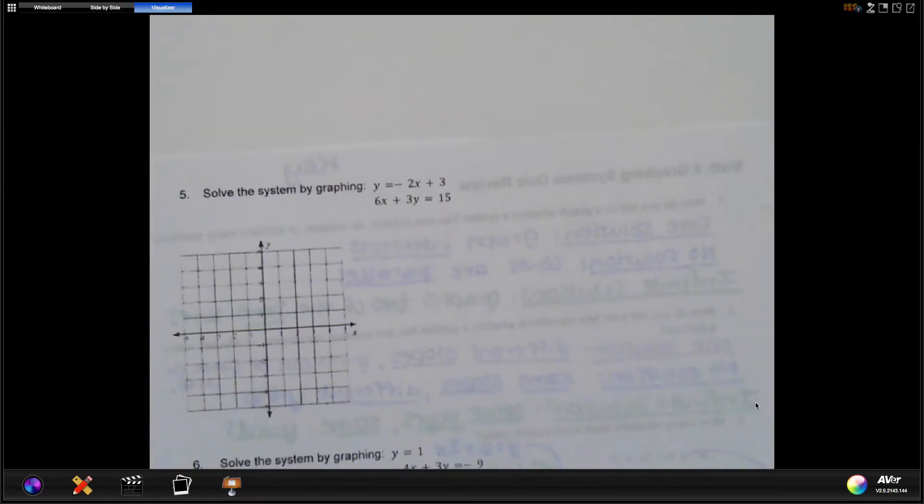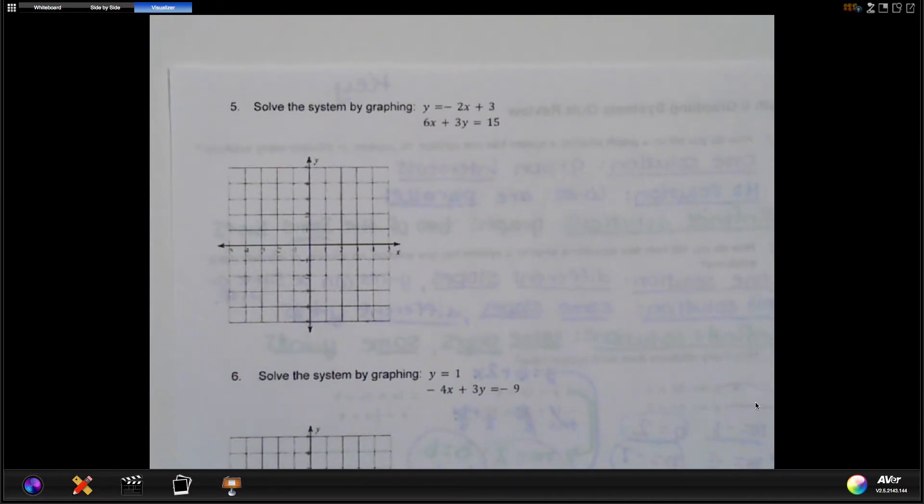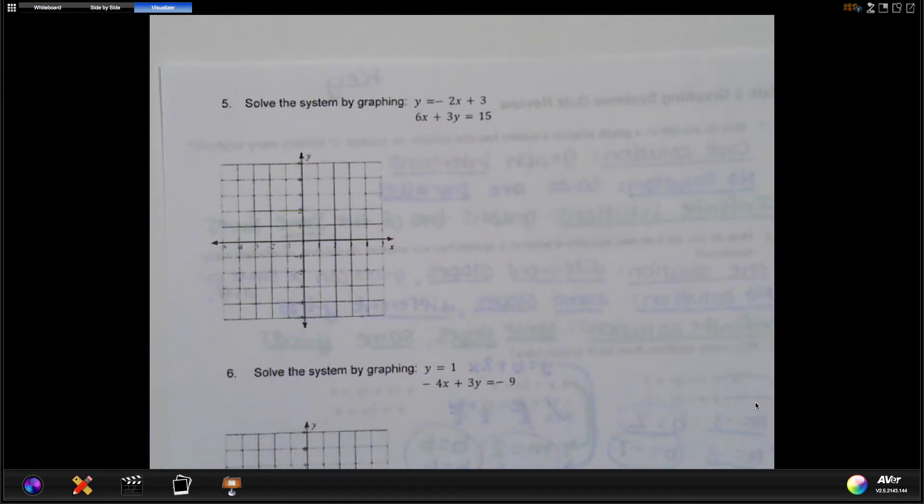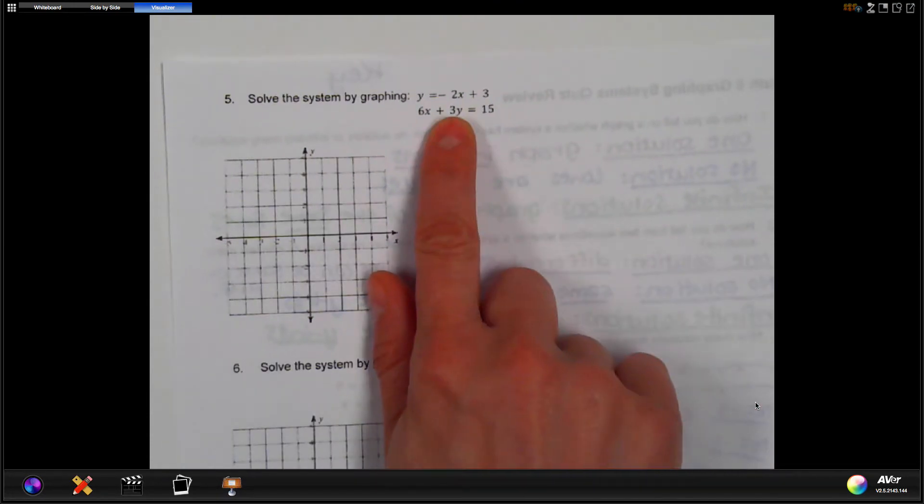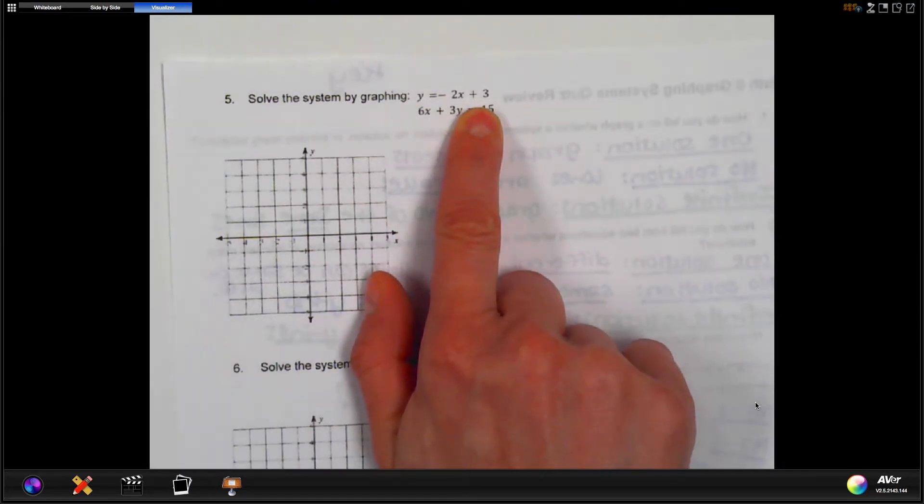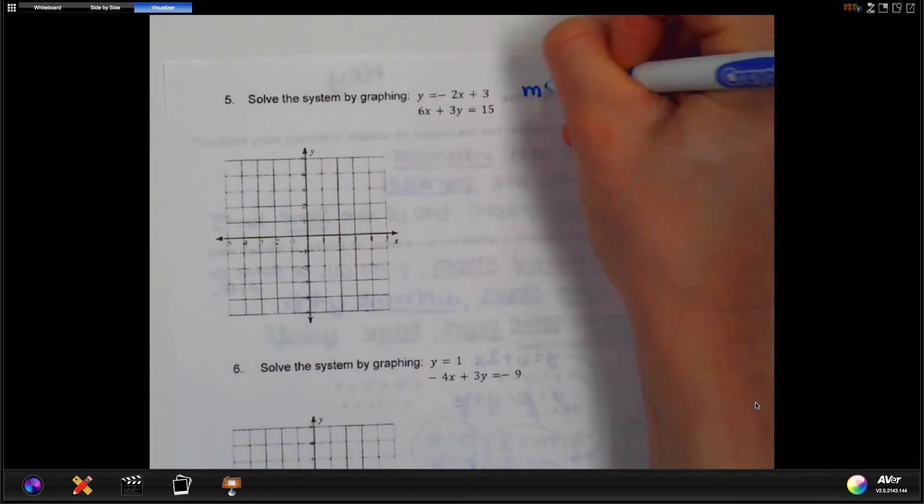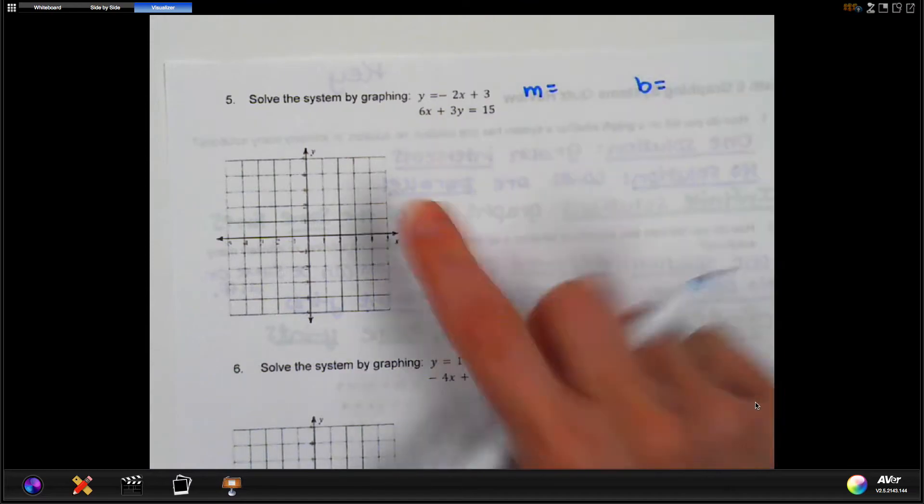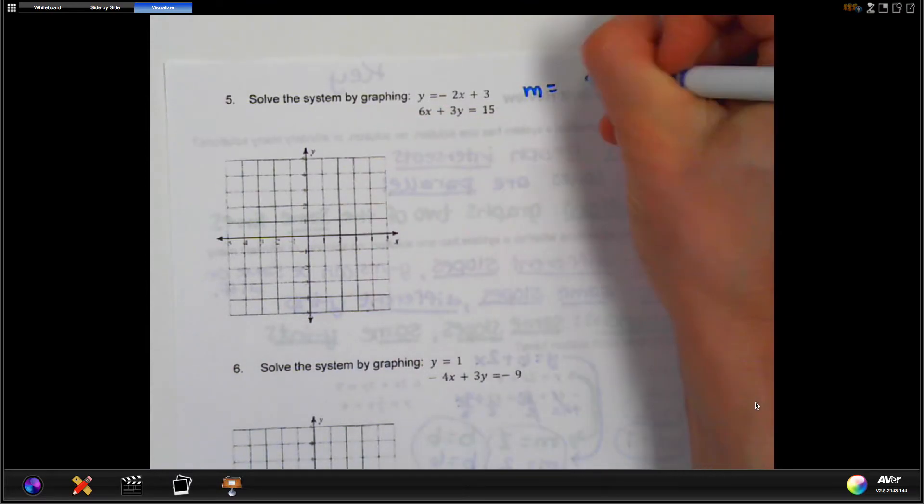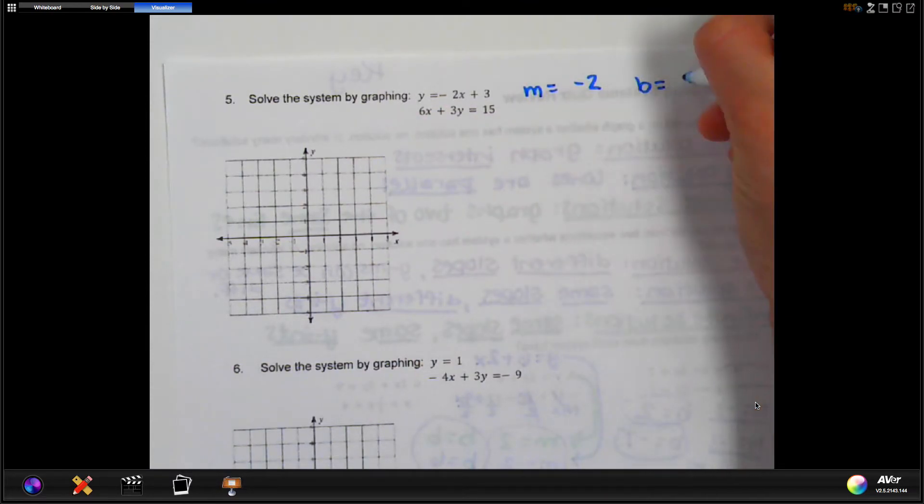Okay, so number 5, the reason I'm choosing to do this one is there are a few more steps, but it will help you do the other ones. All right, so it says solve the system by graphing. So first things first, let's take a look at the top equation. That one's already in y equals, so I can identify m and b. So m and b. On the top equation, my m is negative 2, and my b is 3.